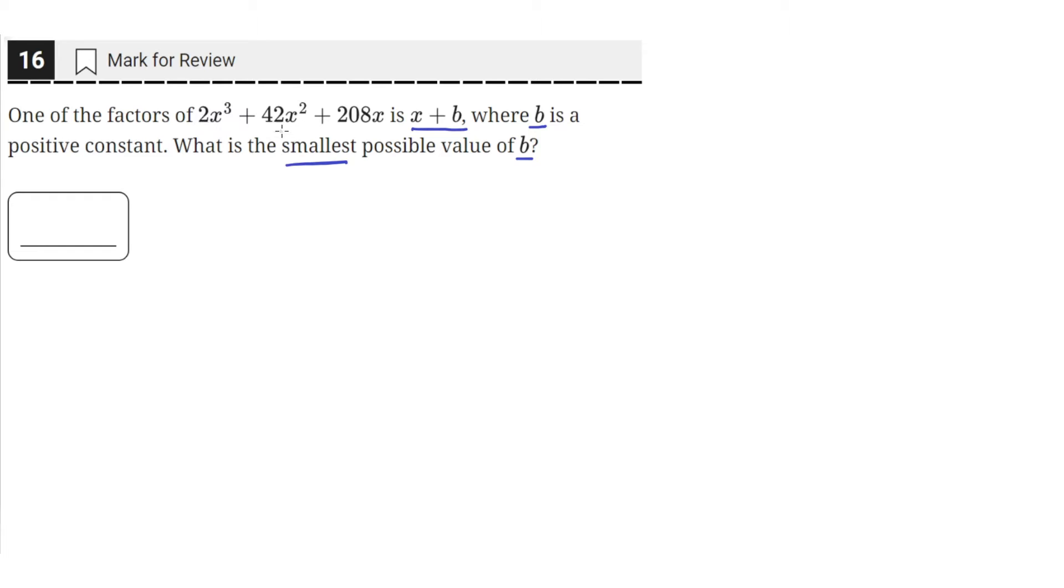So let's take out a 2x common out, since all of these terms have a 2x in them. So the first term will become just x squared, the second term will become 21x, and the third term will become 104.